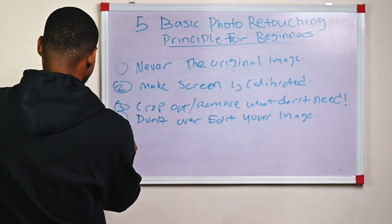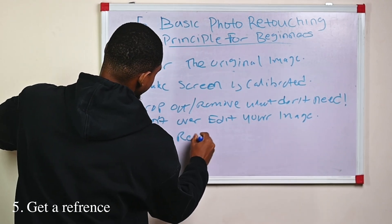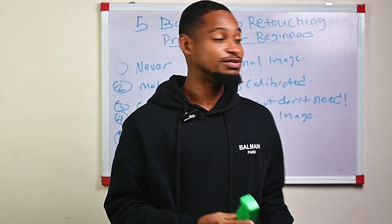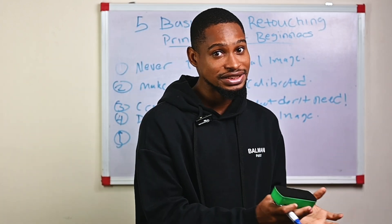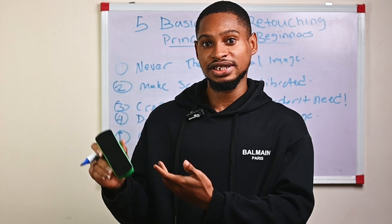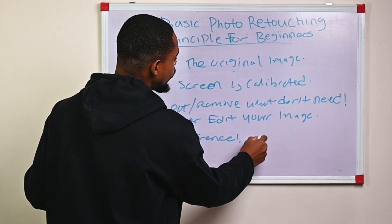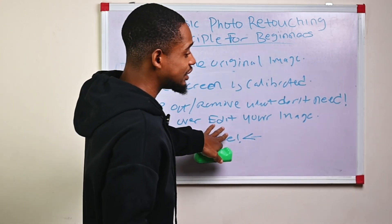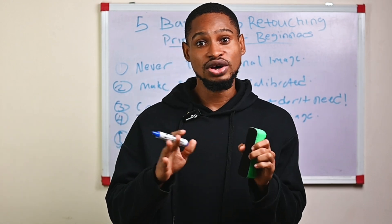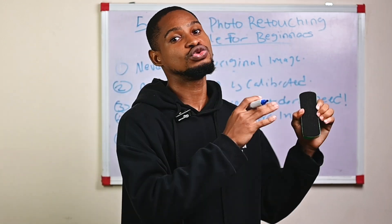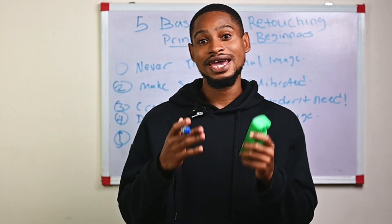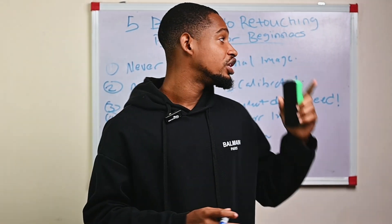Principle number five: get a reference. If you're editing an image and you don't know where to start or where to go, get a reference image — it's like a map that will guide you through your edit. I personally use references when editing; I'll go to Instagram and find an image whose color I like, especially for color grading, and try to tweak my own colors to get close to that reference. You don't have to match exactly — it's just a roadmap in case you're stuck. Getting a reference is a great idea. If you follow these five principles, you're going to improve your editing skills.